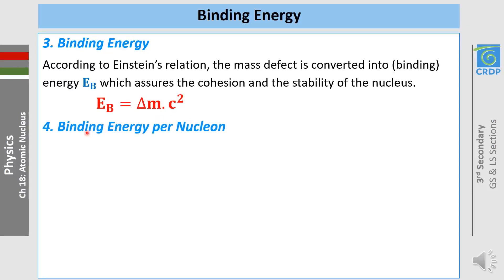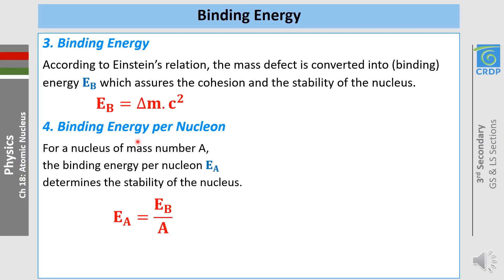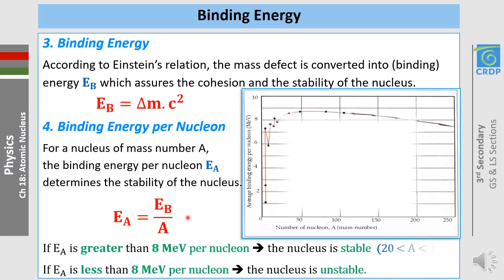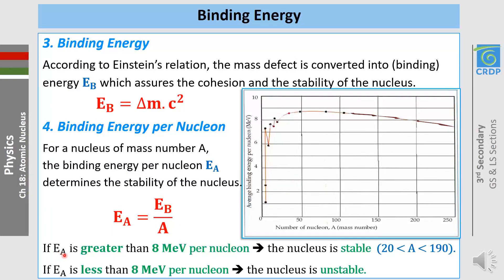Once we calculate the binding energy, we determine the binding energy per nucleon, EA = EB / A. This value determines the stability of the nucleus. If the binding energy per nucleon is greater than 8 MeV per nucleon, the nucleus is stable; this corresponds to mass numbers A between 20 and 190. If EA is less than 8 MeV per nucleon, the nucleus is unstable.